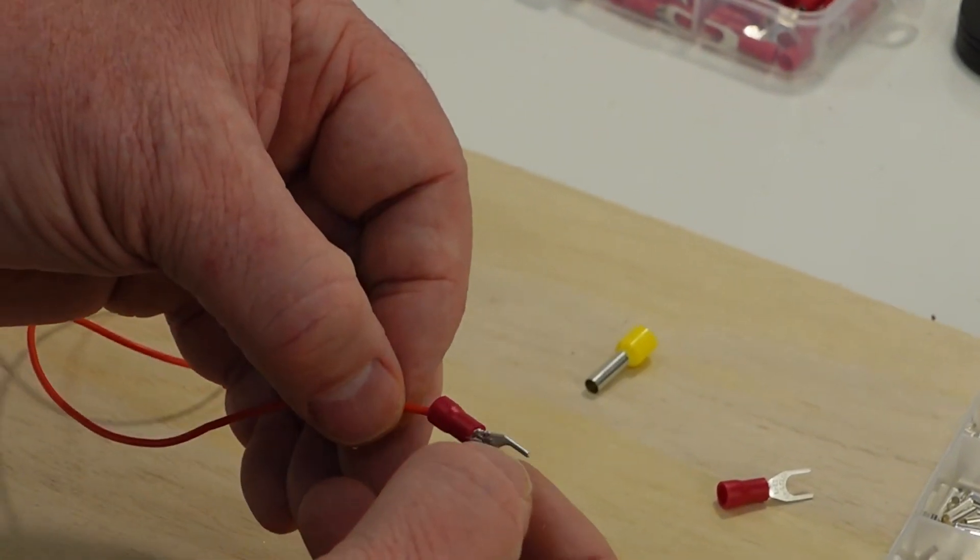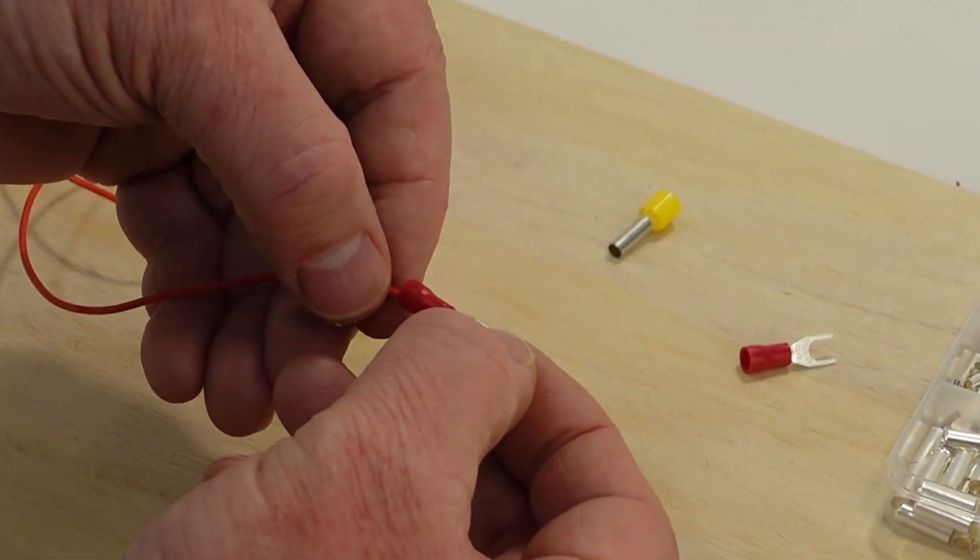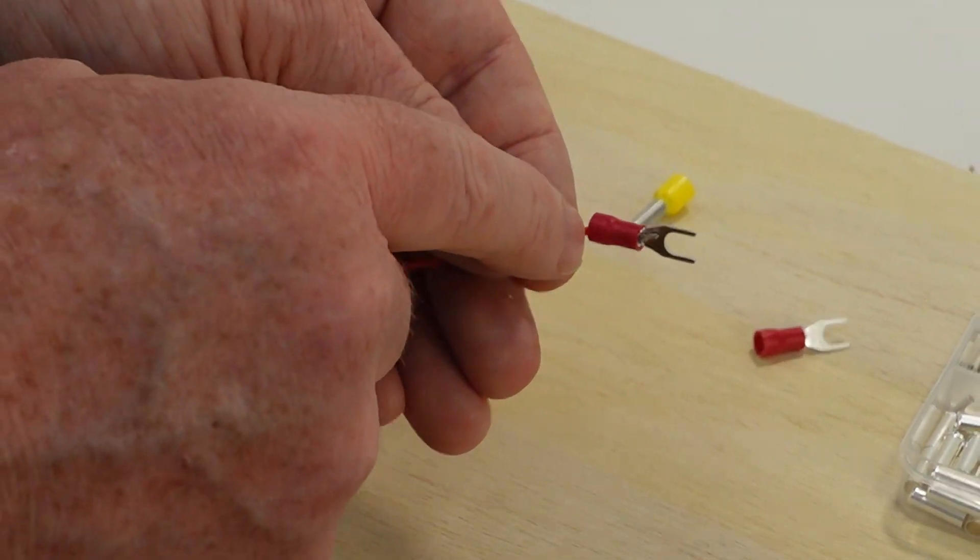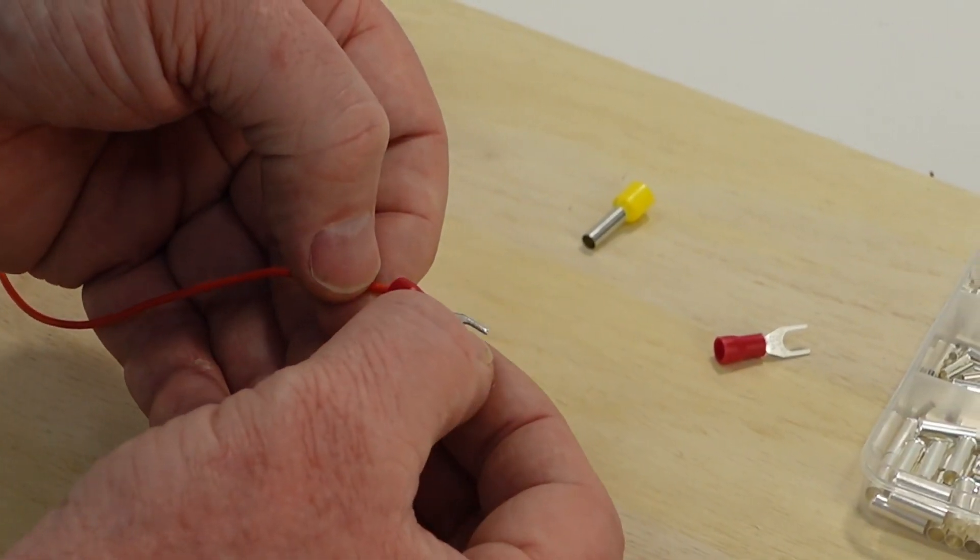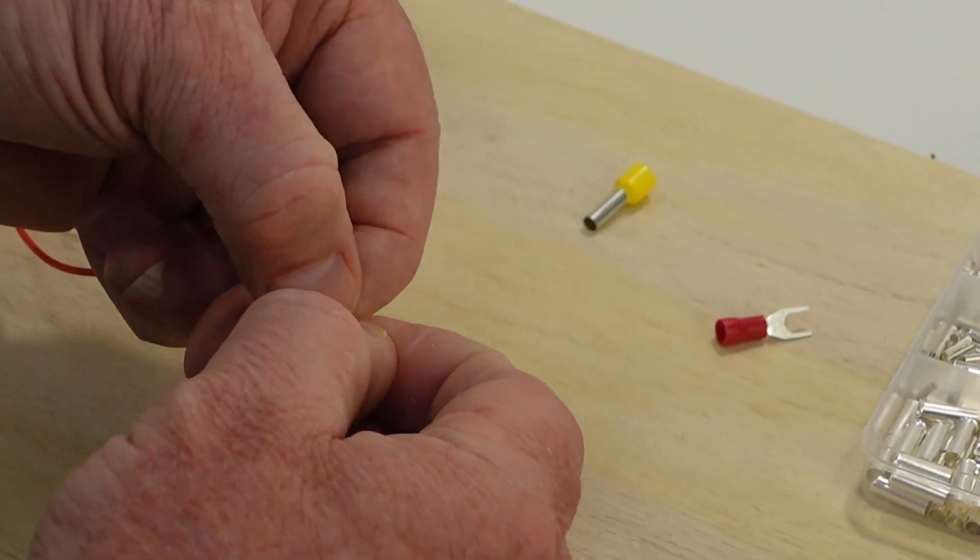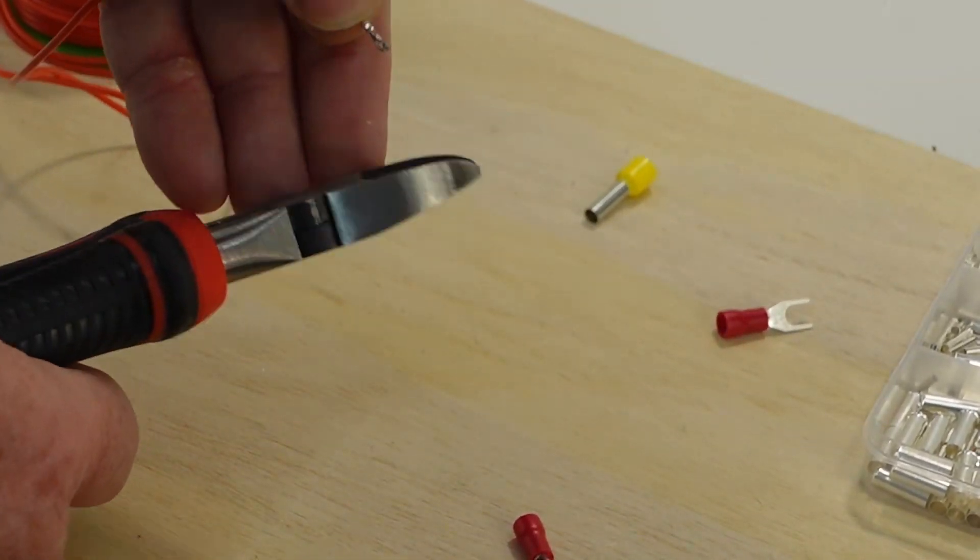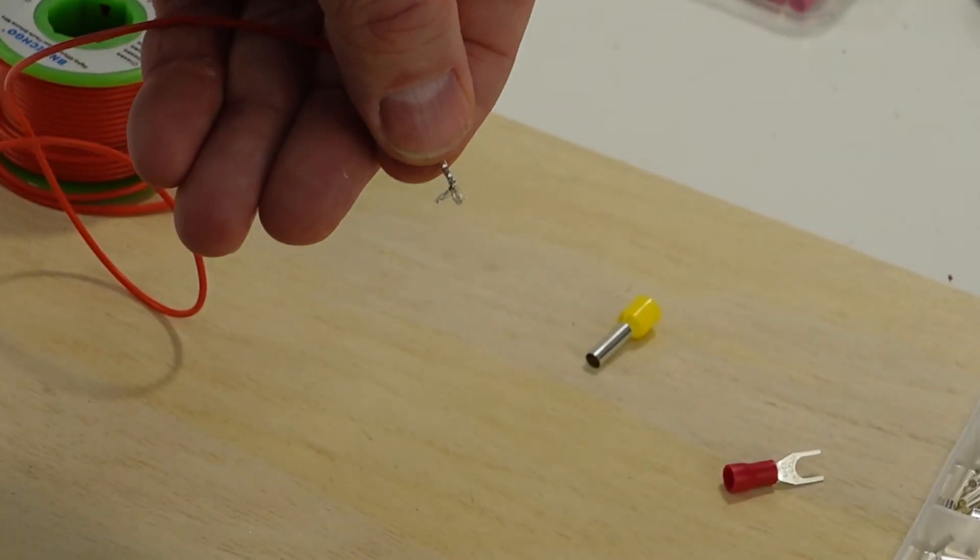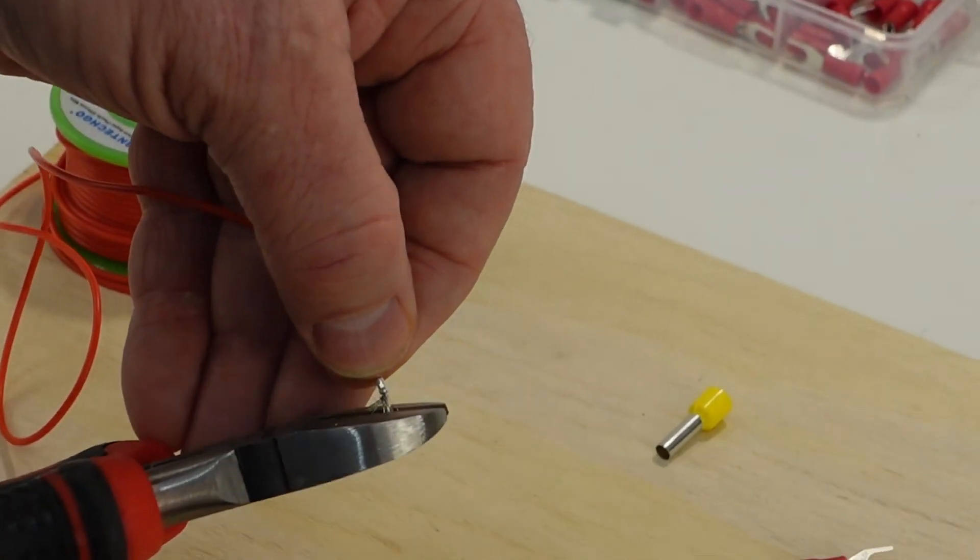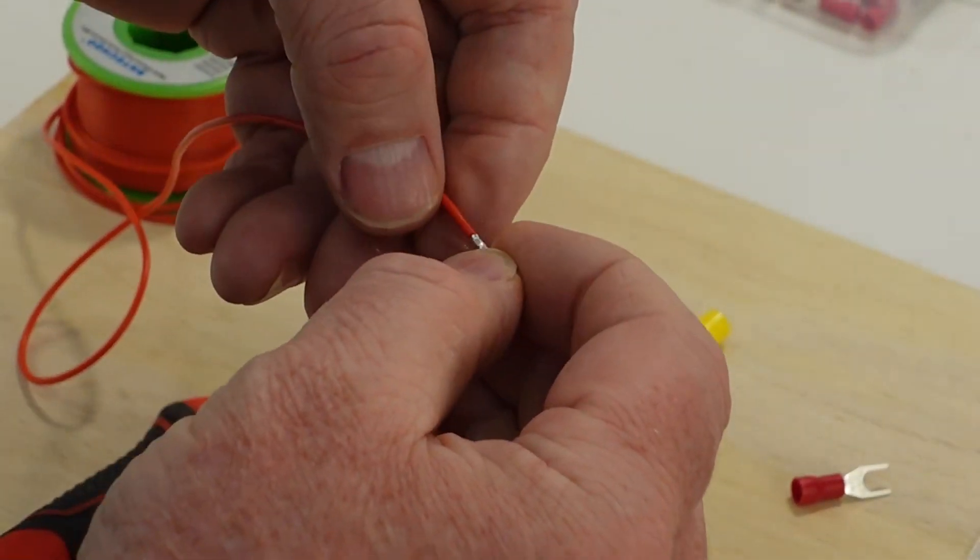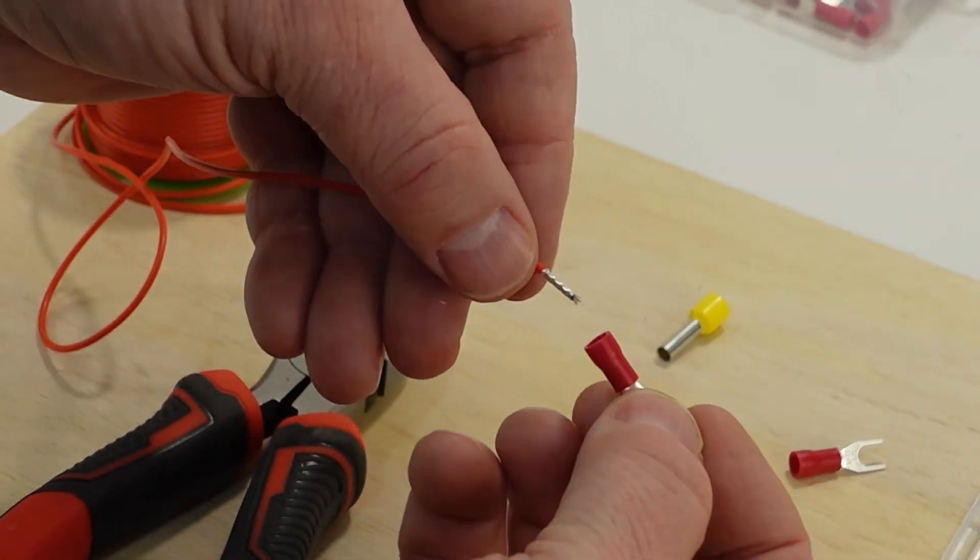So anyway, we've got our ferrule on the end. You want to make sure that the insulation of the wire is tucked under the insulation of the fork connector. Now what I'm going to do here is I'm just going to take this off because I do want to trim off that excess wire. And you can see the strands. I'll just fan the strands out there. You can see them on the end there. I'm just going to trim those off right to the top of the ferrule.